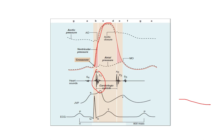We end up ejecting blood, so we see pressure begin to rapidly decrease as the valves have opened and egress blood, until we get to the point where the valves close and we resume diastole - hallmarked by the closure of the semilunar valves, aortic and pulmonic, creating our S2.